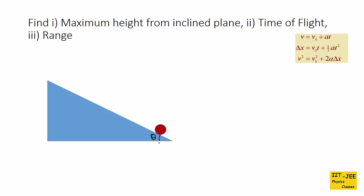Suppose we have an inclined plane inclined at an angle theta, and a ball or projectile is thrown up from the bottom of the incline with initial speed u at an angle alpha from the incline. The particle will go up to some height and then come down, landing and making a curved path. When the particle is at any point, its velocity vector is along the tangent of the path, and gravity acts downward at all times.